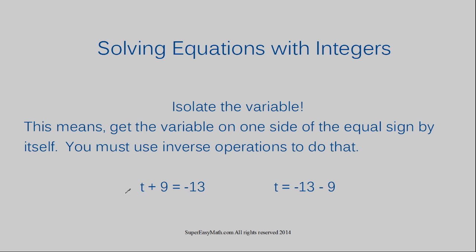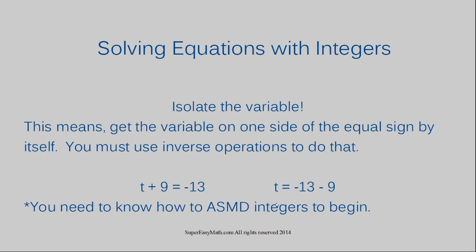In the example T plus 9 equals negative 13, the T is not isolated. In this example where T is on one side of the equal sign by itself, the variable is isolated. You need to know how to add, subtract, multiply, and divide integers before beginning this. Let's move on to example number one.